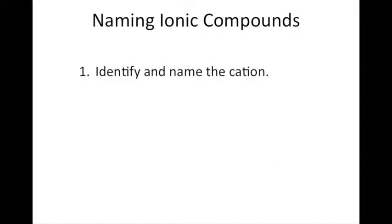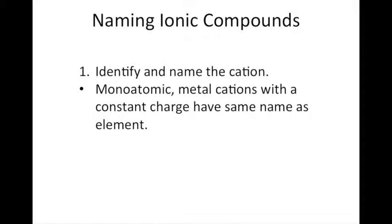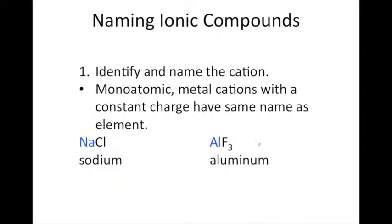If you have a monoatomic metal cation with a constant charge, the ion has the same name as the element. For example, in NaCl and AlF3, the cation is written first. Na — sodium has a constant charge, so the ion is simply called sodium. Al — aluminum has a constant charge, so the cation is simply called aluminum.